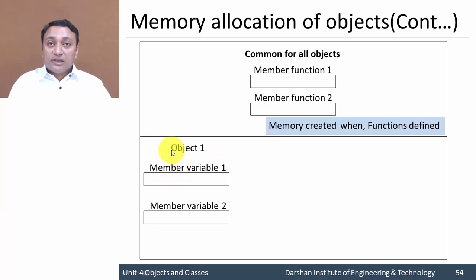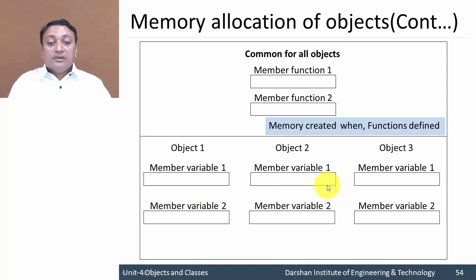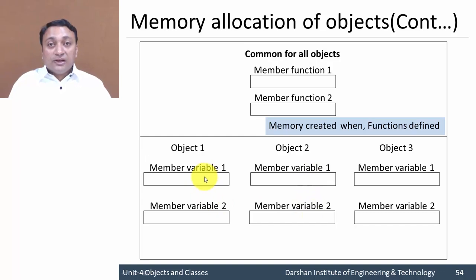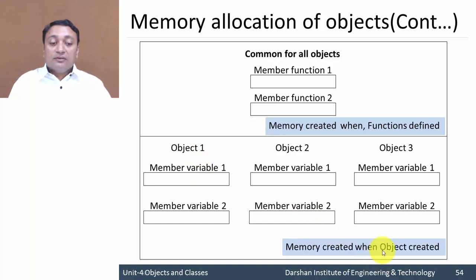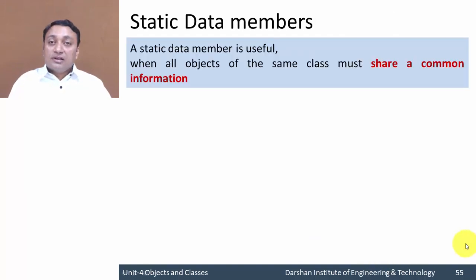In contrast, member variables will hold a separate memory location for each object. For object one, we have allocated memory space for variable one and variable two. If you create other objects, it will allocate separate memory locations for both variables, because member variables will hold different values for each object. Memory is allocated whenever an object is created.